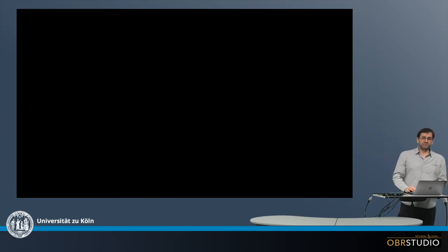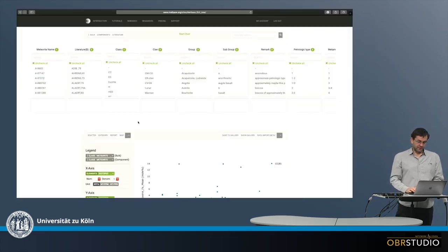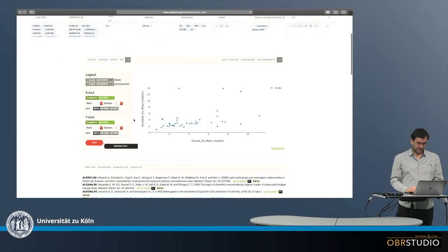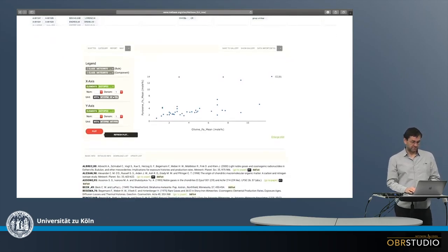So here first I have the MetBase database. And for example, I select a clan, I select a CR clan here. And then down here I can plot two data columns on the X-axis and on the Y-axis. For example, I can plot aluminum versus calcium, and then I plot this.